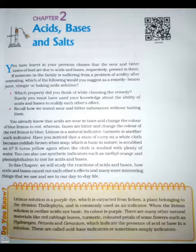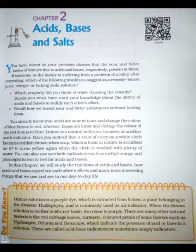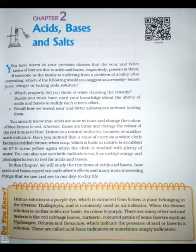2.1 Understanding the chemical properties of acids and bases. 2.1.1 Acids and bases in the laboratory. Activity 2.1: Collect the following solutions from the science laboratory — Hydrochloric acid (HCl), Sulfuric acid (H₂SO₄), Nitric acid (HNO₃), Acetic acid (CH₃COOH), Sodium hydroxide (NaOH), Calcium hydroxide (Ca(OH)₂), Potassium hydroxide (KOH), Magnesium hydroxide (Mg(OH)₂), and Ammonium hydroxide (NH₄OH). Put a drop of each solution on a watch glass one by one and test with a drop of the indicators shown in table 2.1. What color change did you observe with red litmus, blue litmus, phenolphthalein, and methyl orange solution for each solution taken?